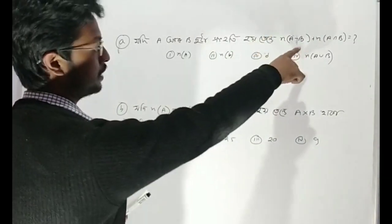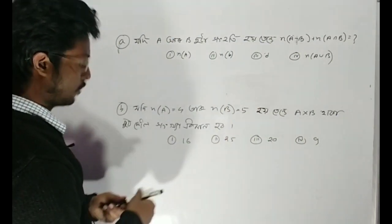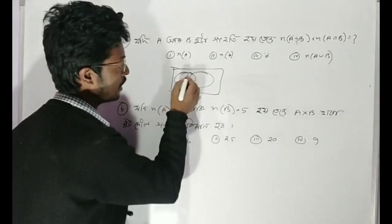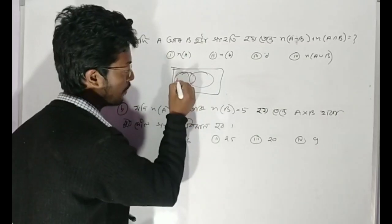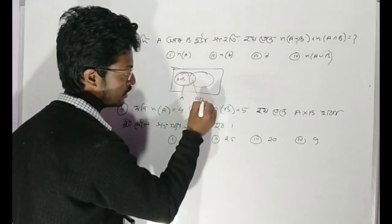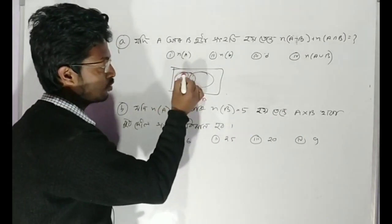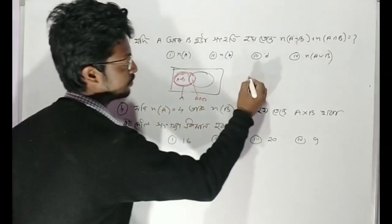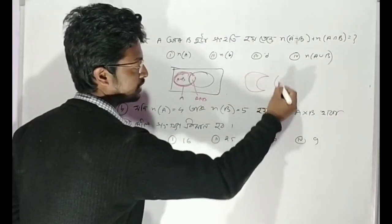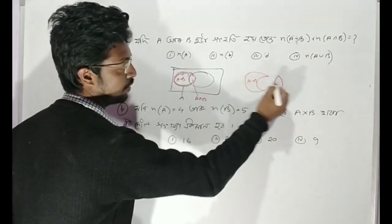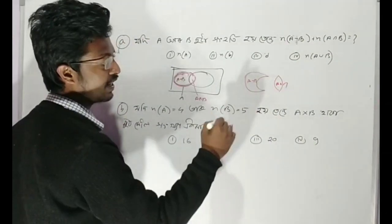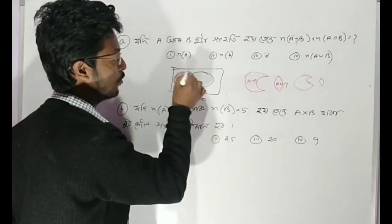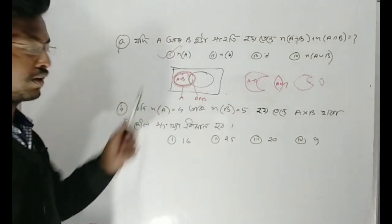Let's start. First question: we will answer A minus B plus A intersection B. We have A minus B — we cannot call A minus B unless we know A intersection B. So we will work out A. Only the n of A.